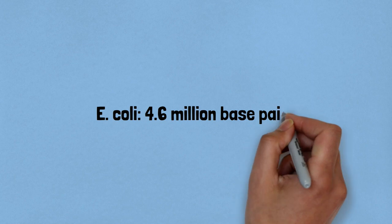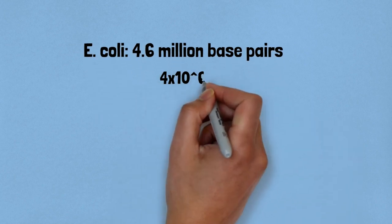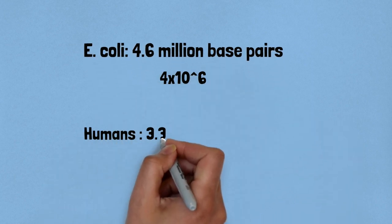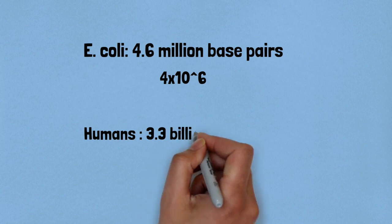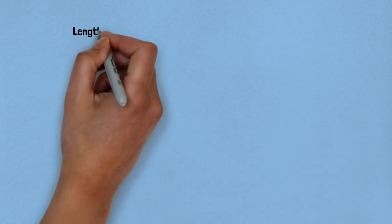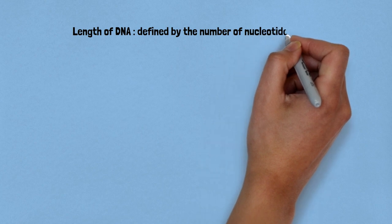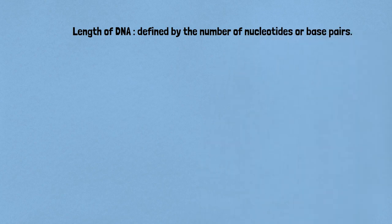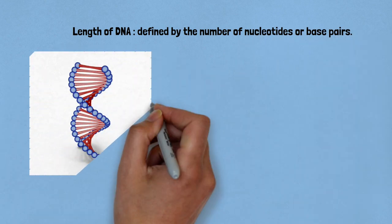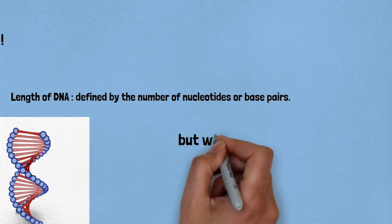Did you know that the length of the DNA of E. coli is 4.6 million base pairs while humans have a DNA that is 3.3 billion base pairs long? The length of the DNA is defined as the number of nucleotides present in it, or a pair of nucleotides referred to as base pairs.